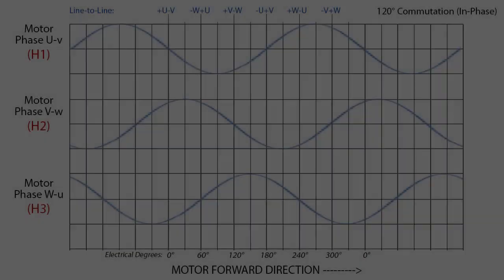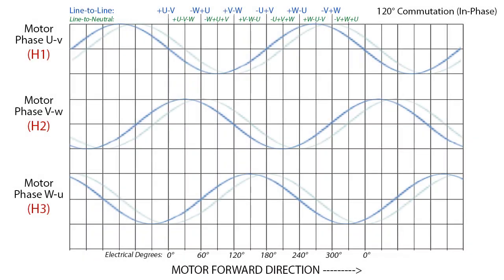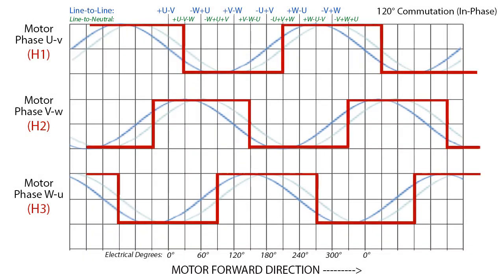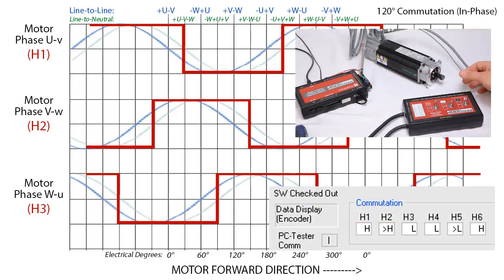Depending on the motor brand, some commutation signals are aligned to a line-to-neutral lockup, which uses all three switches. When we try the standard line-to-line lockup using only two switches, there's no toggle.